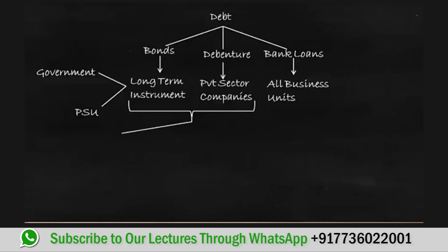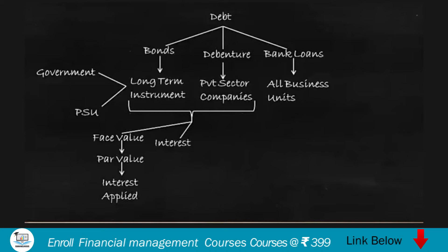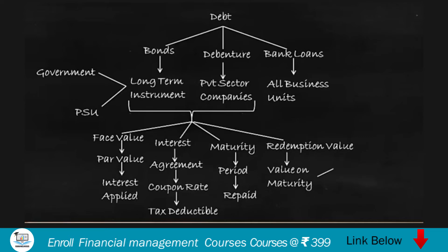Bonds and debentures have certain features. First, they are issued at a value and the original value is called face value or par value, and interest is calculated only on this value. This interest is agreed upon in an agreement and is called the coupon rate, which is also tax deductible. These borrowings have a maturity, and on expiry of the maturity period they must be repaid. They also have a redemption value — the value to be paid on maturity — which can be at par, at premium, or at discount.